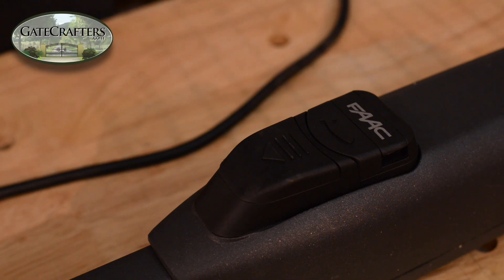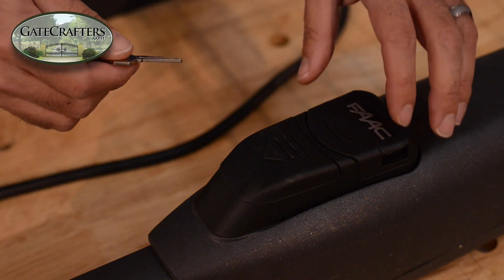This video is how to set your limit switches for an ES1600 or ES1602 gate opener. First you want to manually release your arm.